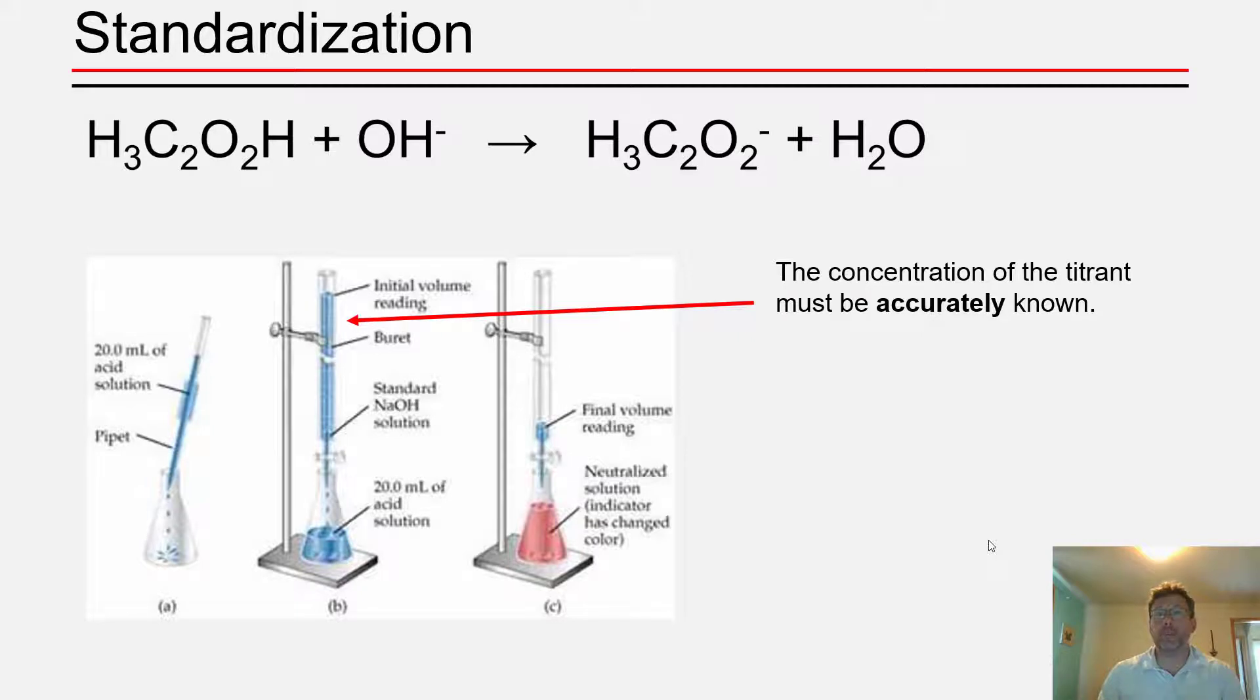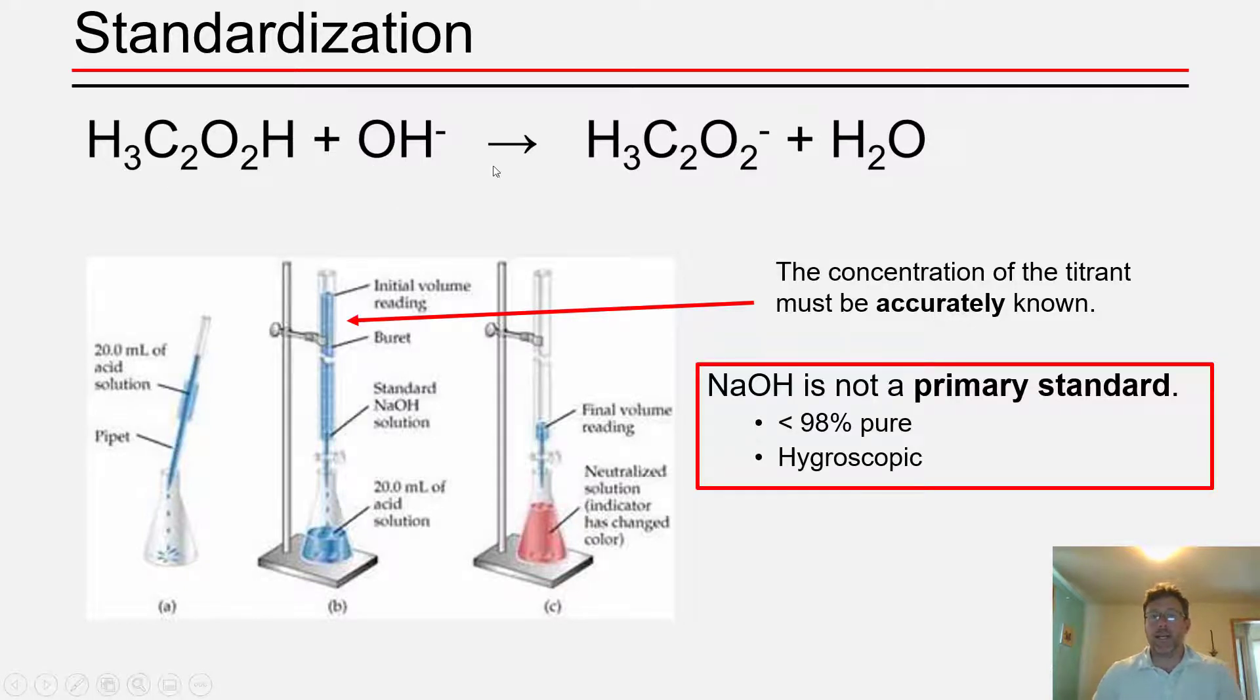Well, it comes down to real world concerns like reactant purity and compound stability over time during storage, which may introduce error into our titration assay. So for instance, in our titration of acetic acid, our titrant was hydroxide. Now, hydroxide solutions will usually be prepared from either the solid sodium hydroxide or potassium hydroxide. And neither of these solid chemical compounds are what's known in analytical chemistry as a primary standard.